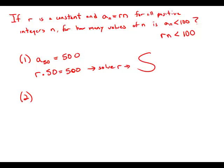Statement two tells us that a_100 plus a_105 equals 2050. Using the formula, this means r times 100 plus r times 105 equals 2050.